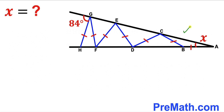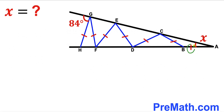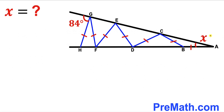As you can see in this given diagram, we get this angle X. Moreover, we have got these segments AB, BC, CD, DE, EF, FG, and GH. Bear in mind that all of these segments are equal in length, and furthermore this angle G is 84 degrees. Our task is to find the value of this angle X.